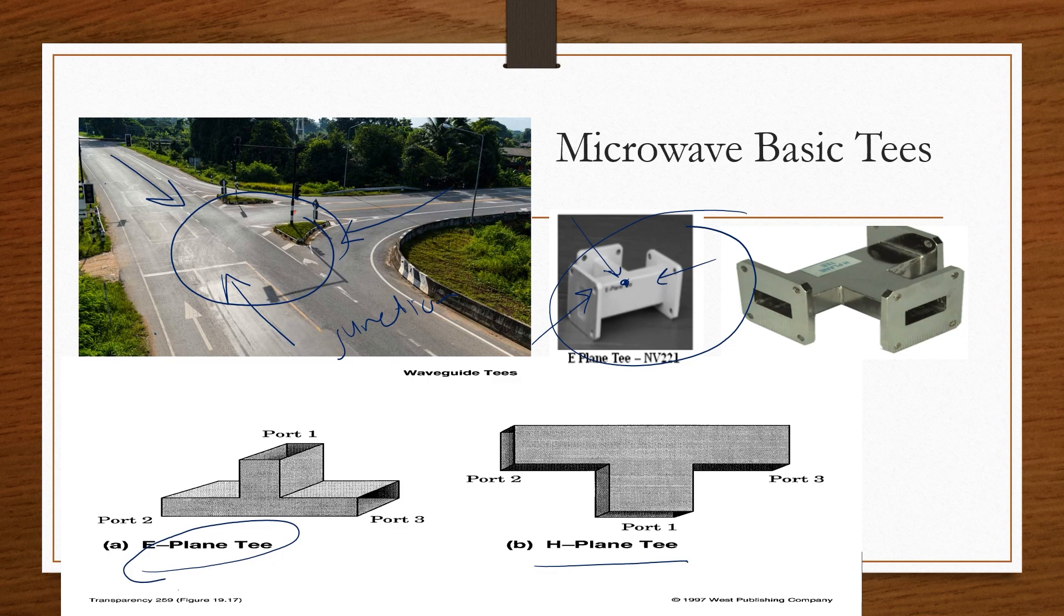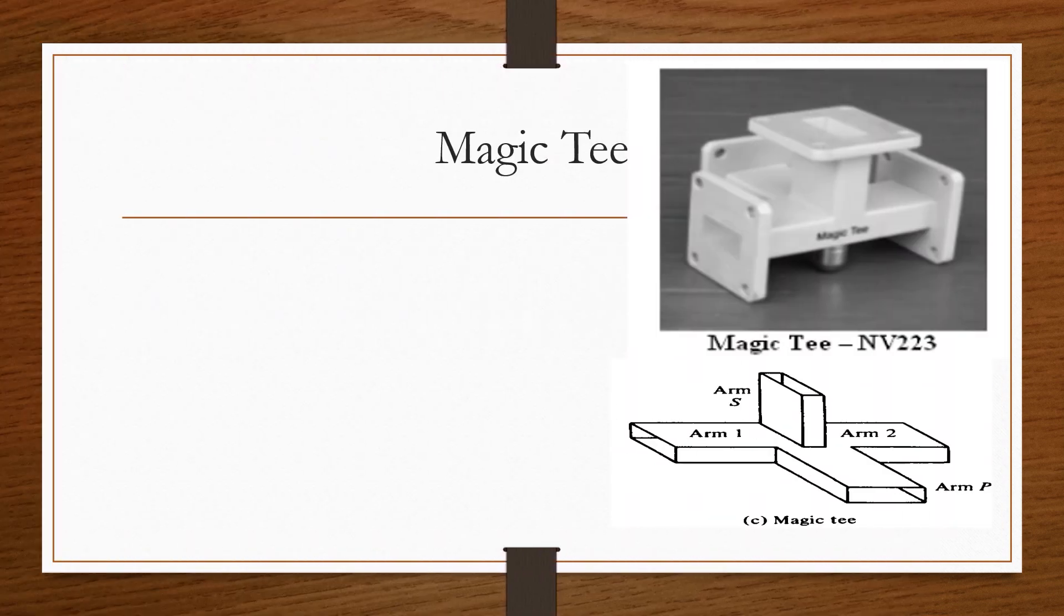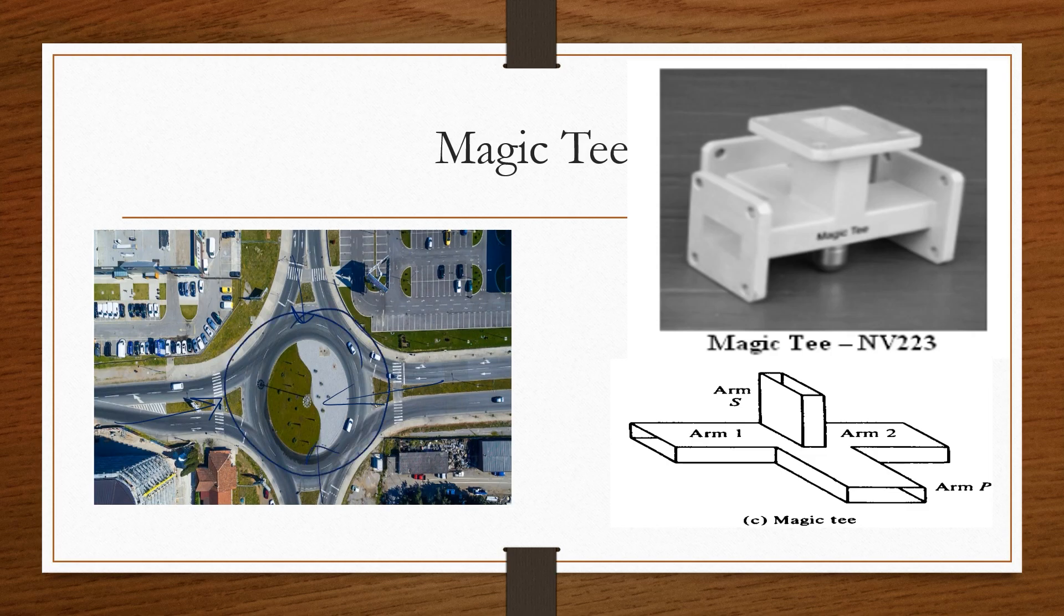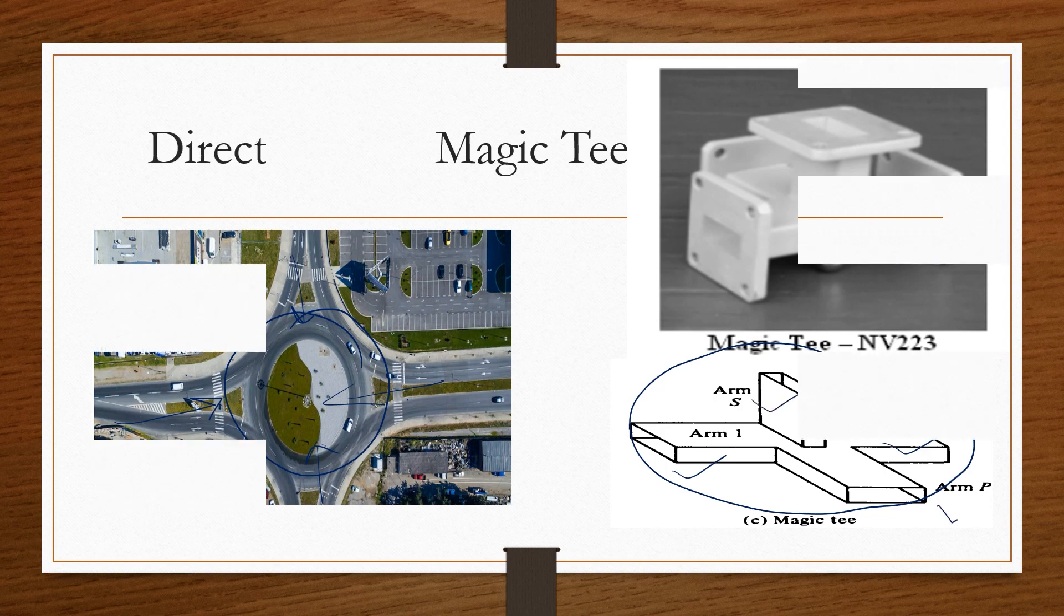Now imagine this is a road where we are having four roads connected to one point. So this is nothing but another junction which is a four port. So in microwave that four port device is called Magic T. So Magic T is having arm 1, arm 2, arm S and arm P.